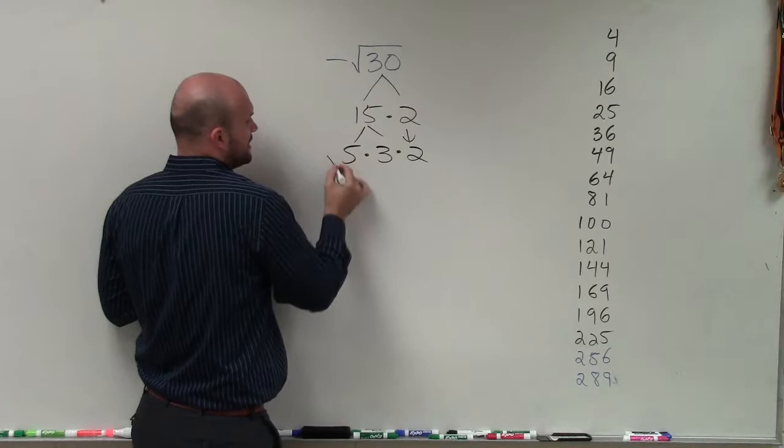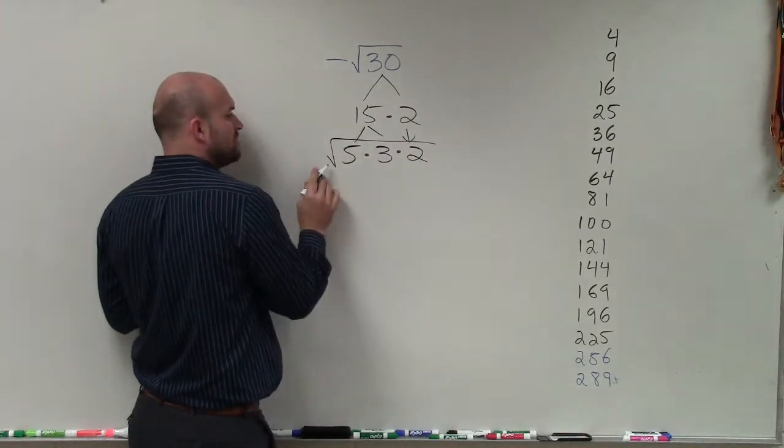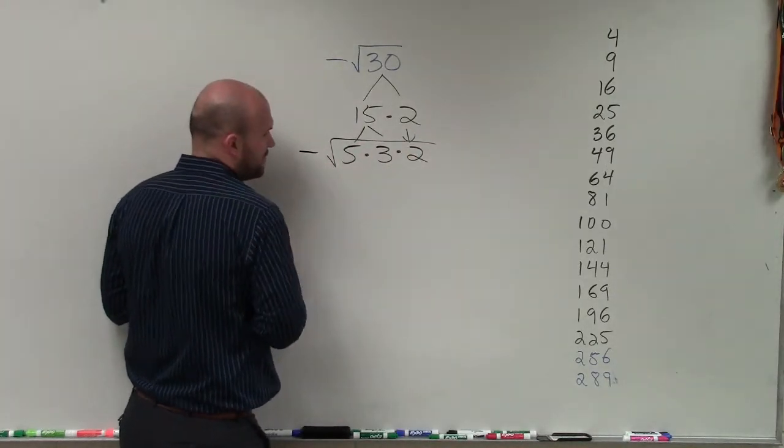So really, the square root of 30 is the same thing as the square root of 5 times 3 times 2. And there's the negative as well.